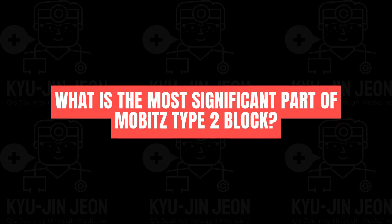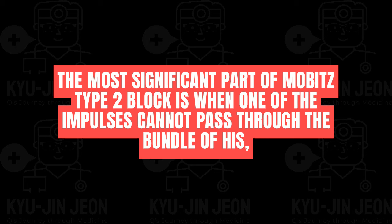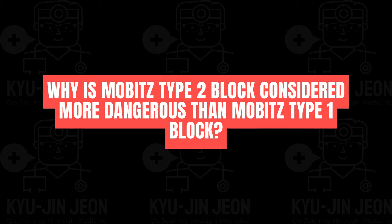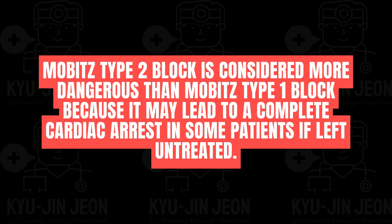The most significant feature of Mobitz type 2 block is when an impulse cannot pass through the bundle of His, resulting in absence of ventricular activation. Mobitz type 2 is considered more dangerous than Mobitz type 1 because it may lead to complete cardiac arrest if left untreated.